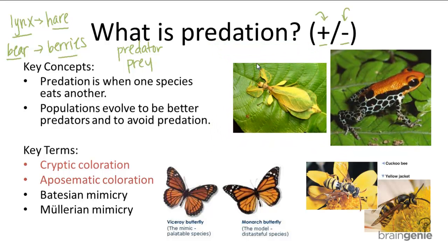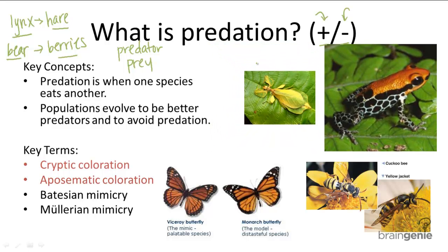Aposematic coloration is when poisonous organisms use bright colors — particularly red and orange — to warn off predators. Because of this organism's distinct coloration, predators learn to avoid them. This frog is colored with red and orange on its head, and predators learn over time that these frogs are dangerous because they contain poisons, so they learn to avoid anything with red and orange.